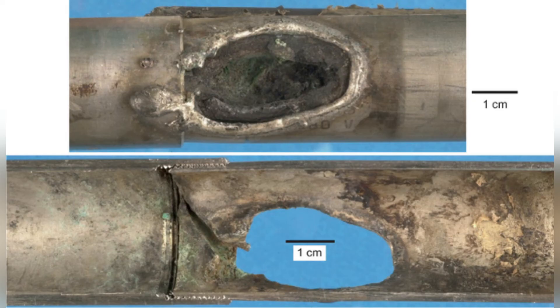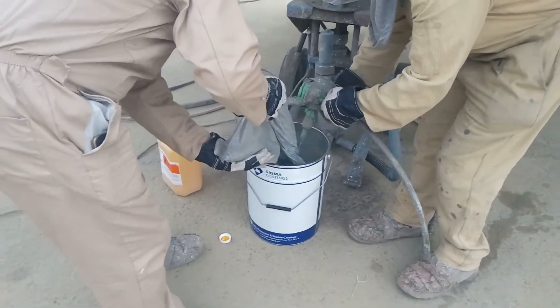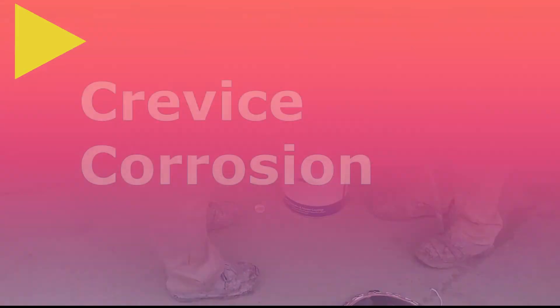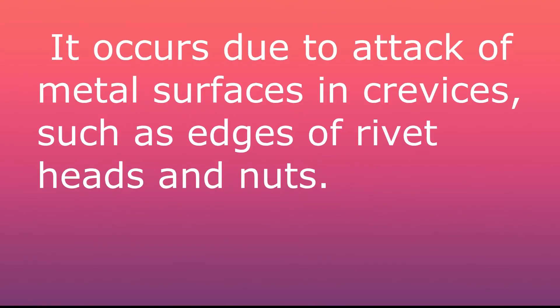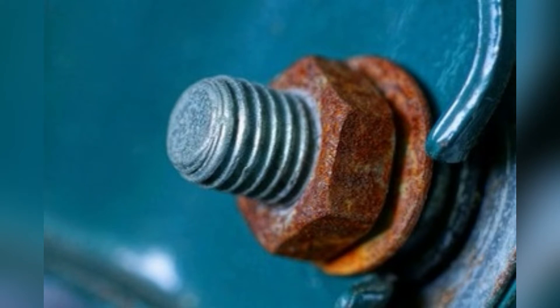Stress cracking intensifies when these factors combine with exposure to a corrosive environment. It is observed in fabricated parts subjected to mechanical stress. Crevice corrosion occurs due to attack of the metal surface in crevices such as edges of rivet heads and joints. Corrosive substances like dust or sand accumulate on surfaces and create an environment for water to collect and corrode the material.